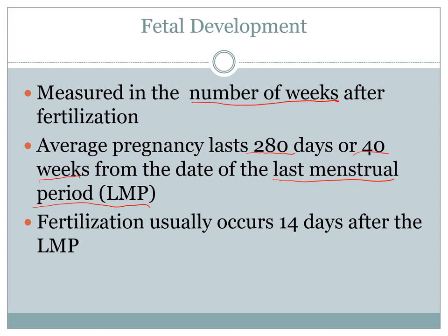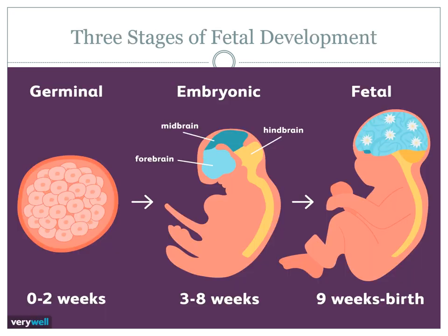There are three stages of fetal development. The pre-embryonic stage covers fertilization right through until about week two. Once we get to week two we start referring to it as an embryo, and then once we get to week nine the embryo turns into a fetus. I'm not going to get into the debate of when a baby is a baby - I'm just going to talk about the science behind it.